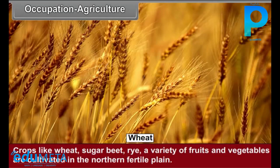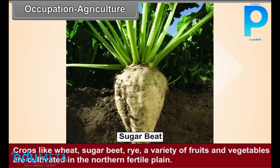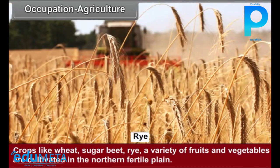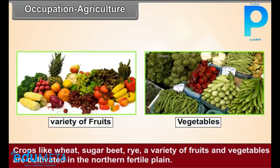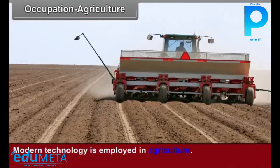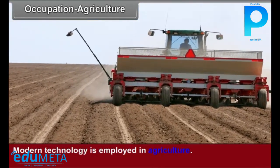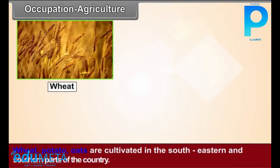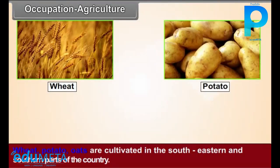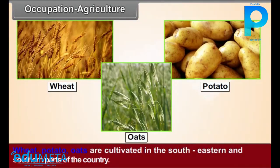Occupation – Agriculture. Crops like wheat, sugar beet, rye, and a variety of fruits and vegetables are cultivated in the northern fertile plain. Modern technology is employed in agriculture. Wheat, potato, and oats are cultivated in the southeastern and southern parts of the country.